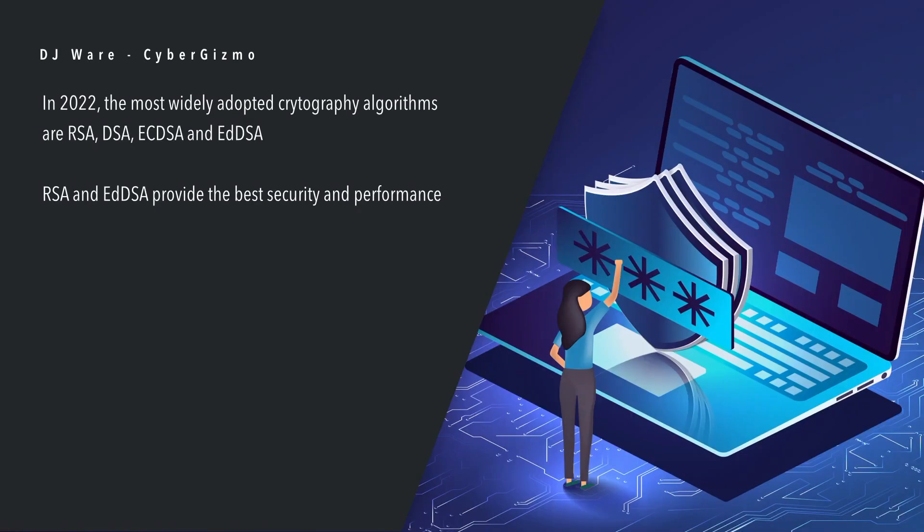Not to worry — there are a lot of algorithms in development right now that are being built to thwart the quantum computing problem. In 2022, the most widely adopted cryptographic algorithms are RSA, DSA — and I'm putting DSA in quotes because it is a member of the latter two protocols — ECDSA and EDDSA. The short answer, if that's all you needed from this video: RSA and EDDSA provide the best security and performance overall for a secure shell.